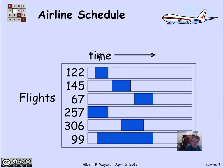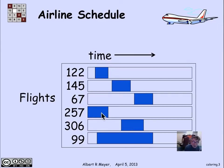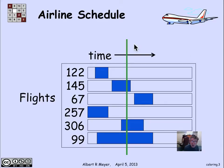Let's look at a sample schedule. There are six flights here numbered 122, 145 through 99. The horizontal bar represents times during the day. Flight 122 is on the ground from 3 AM to 7 AM. Flight 145 is on the ground at a completely disjoint time interval. Flight 257 is on the ground from midnight until about 6 AM — it does overlap with 122. By sliding a vertical green line across the bar and looking at the maximum number of blue intervals crossed, it's three. The largest number of planes on the ground at any given moment is three, which means we can get by with three gates.